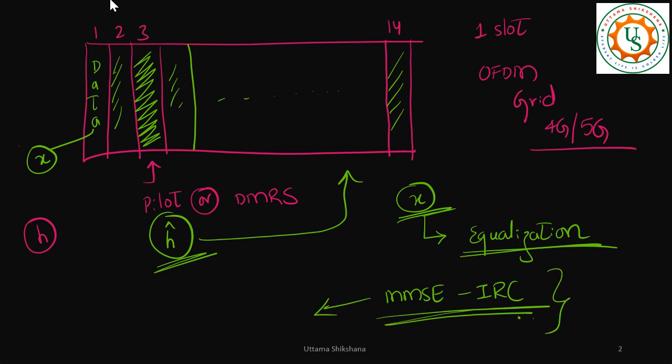Let us write the equation for this. I would say x_hat would equal to, I will write it for the MIMO case, h_hermitian h plus R_nn inverse h_hermitian into y_bar. Now we got this h.